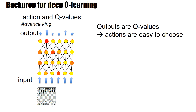In all these cases the idea is that the input configuration on the board is represented by a large number of neurons, and the output represents Q-values — Q-values for each of the different actions that are possible in the game. And once we know the Q-values, actions are relatively easy to choose.